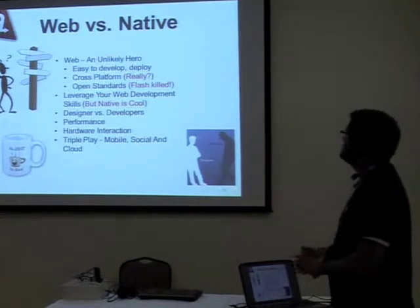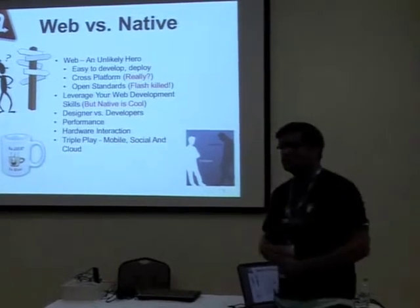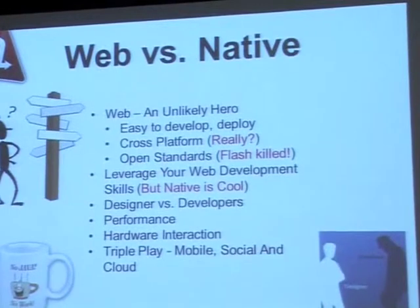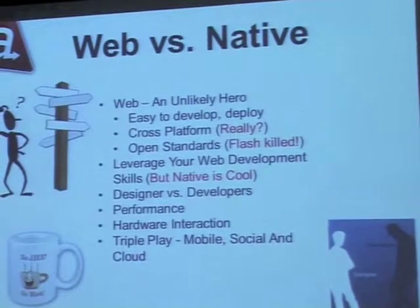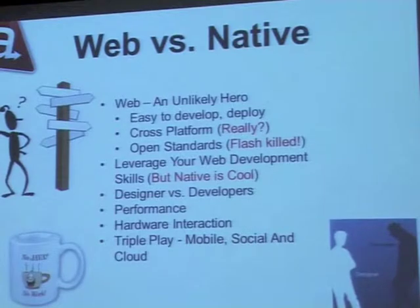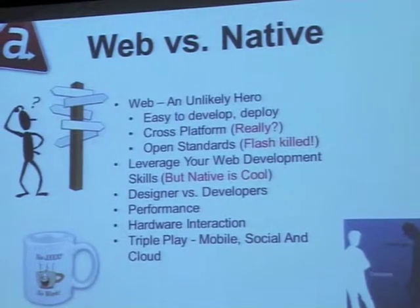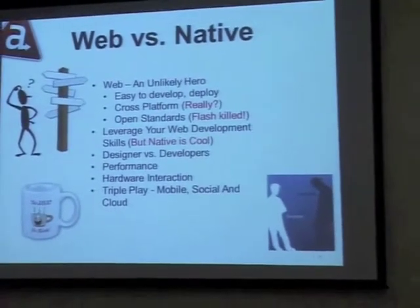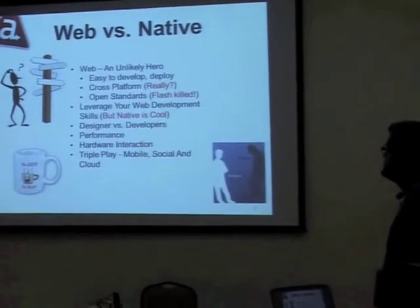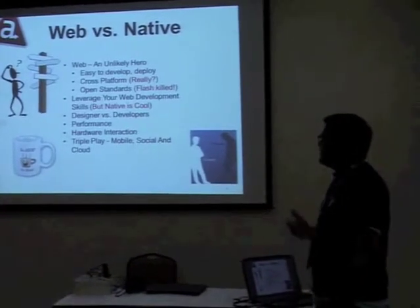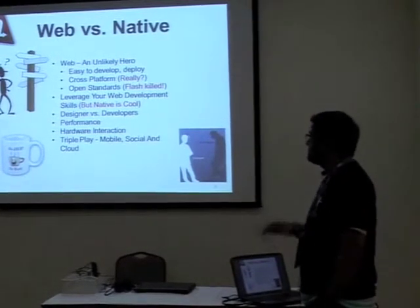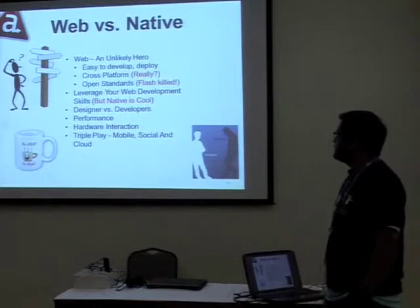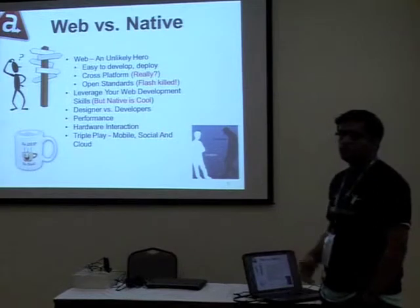Coming to the classical web versus native debate — how many of you know HTML and JavaScript? How many know Java? How many know both? Frameworks like Titanium and PhoneGap essentially bridge the gap between a web developer and a native developer. The web has emerged as an unlikely hero — you can quickly develop in HTML and JavaScript, it's cross-platform as long as you use open standards. Wherever you prefix the word 'open,' it's HTML5 — and suffixing it with something like 'against open' kills technologies like Flash. That's what Steve Jobs did last year.